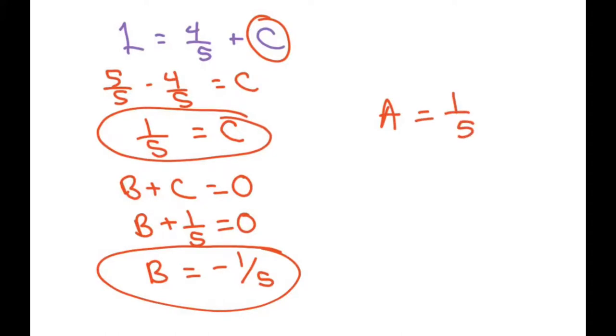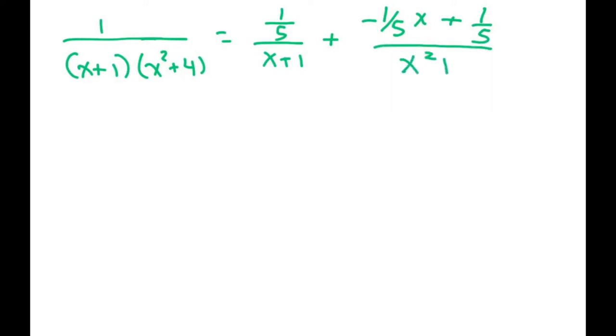So all we have to do is plug it in. When we plug it in, we're going to get 1/[(x+1)(x²+4)] equals my A, which is 1/5, over (x+1), plus negative 1/5 for my B, and that's times x, plus my C is 1/5, and then you just write your denominator, which is x²+4. And that's your final answer.